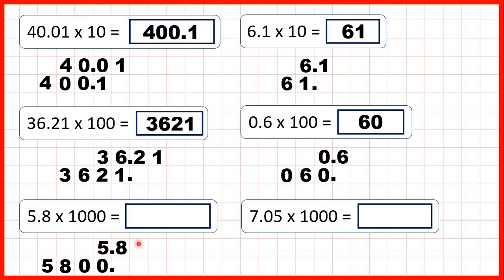So our answer is 5,800, because now the decimal point is at the end we have a whole number. And that answer makes sense because we know that 5 times 1000 is 5,000 and 6 times 1000 is 6,000. So because 5.8 is between 5 and 6, our answer is between 5,000 and 6,000.